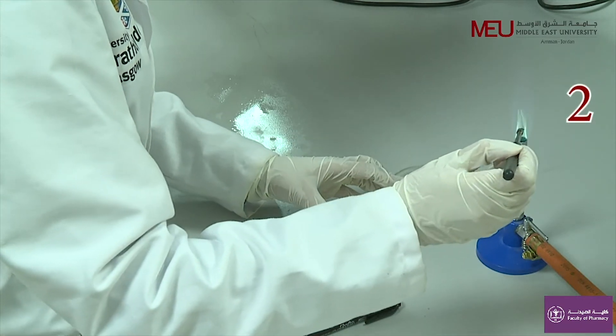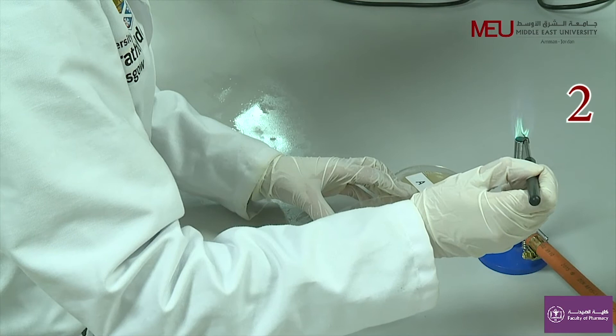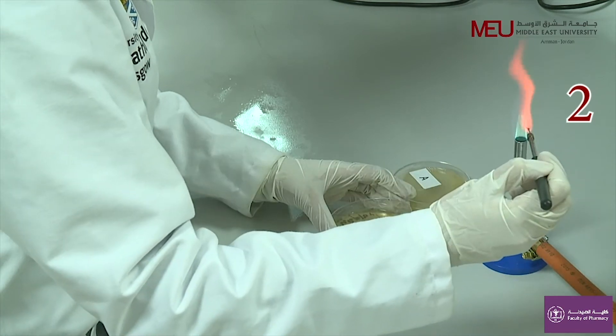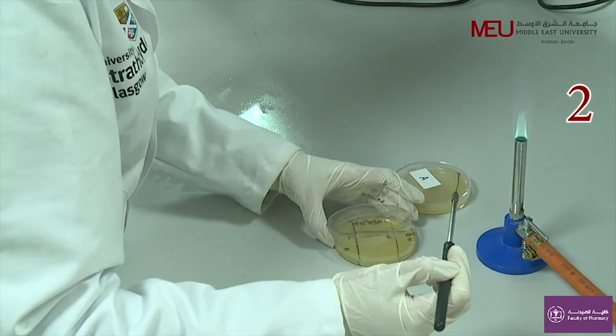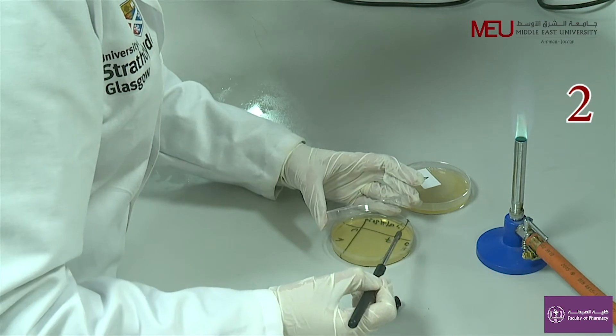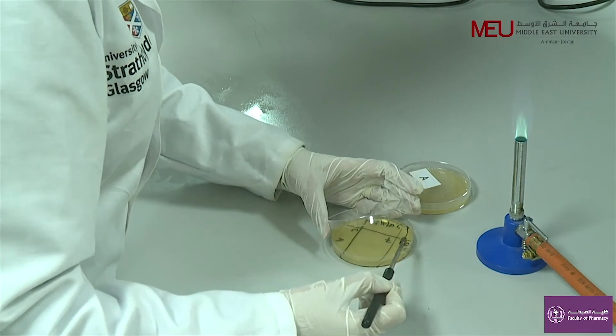Flame the loop to sterilize it. Do not obtain a new inoculum, but use the sterile loop to streak from quadrant 1 to quadrant 2. Be sure that you streak several times through quadrant 1 to pick up some organisms on the loop.